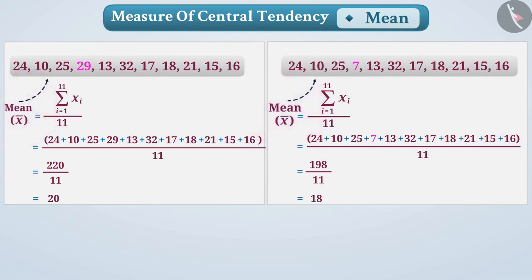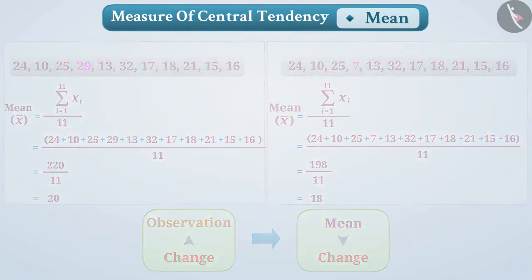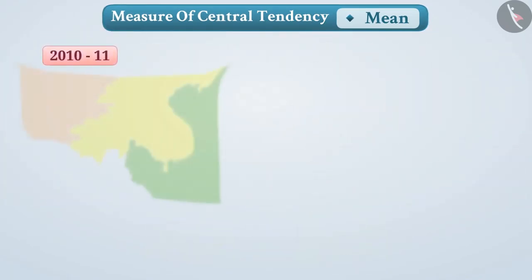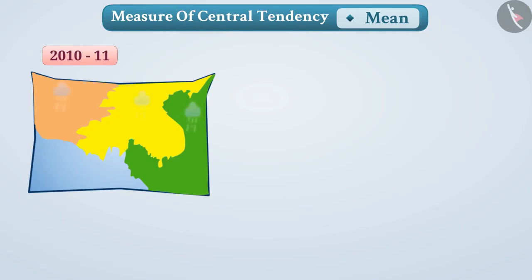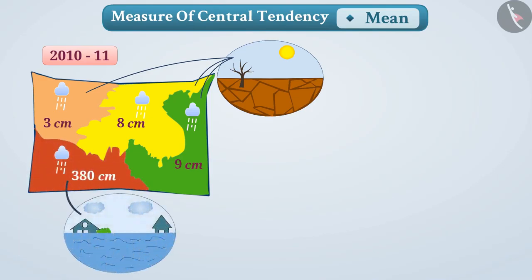In this way, the mean depends on all observations. If there is a change in an observation, then the mean also changes. Suppose in a year, three districts of a state receive rainfall of 3 cm, 8 cm, and 9 cm, due to which those districts had to face drought. And in the fourth district, the rainfall was 380 cm, due to which the district faces flood.